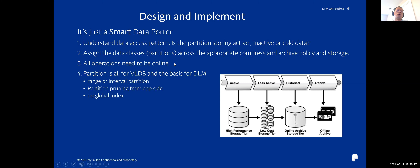We move data based on the partition. Partitioning is a key point for very large databases and is the basis for DLM. We prefer range or interval partitioning. For a hash partition table, all active data and inactive data are stored in the same physical partition. In that case, if we want to move the data, we have to move it record by record. But if we use range or interval partitioning, we can move the data at the partition level.